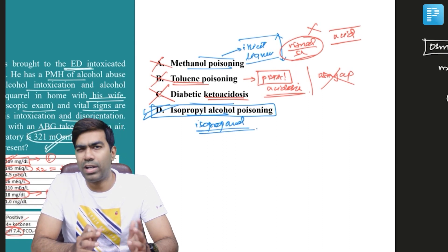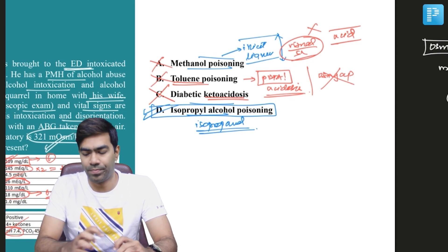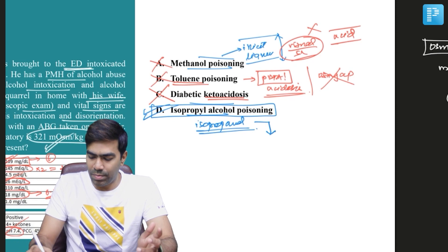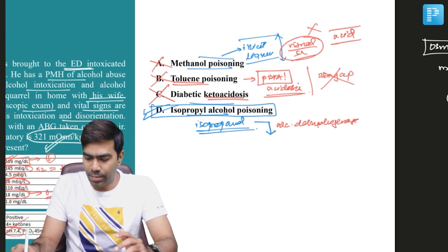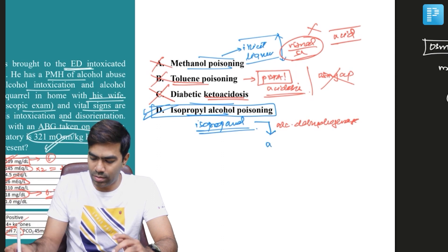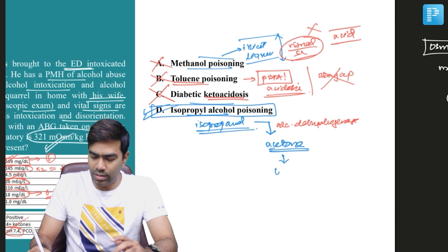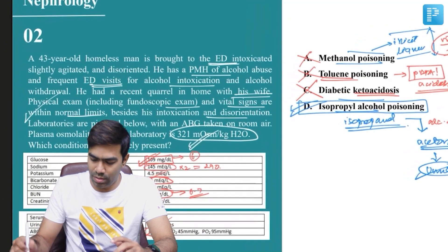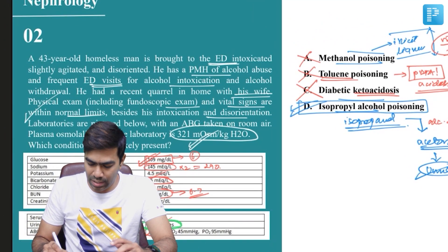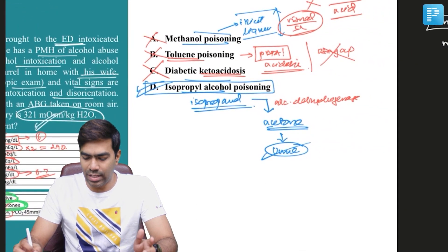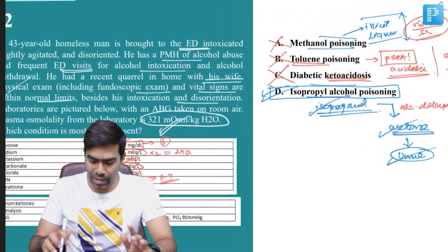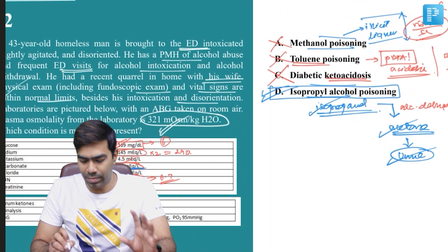Isopropanol is found in petroleum products generally — paints, paint thinners, and sometimes nail polish thinners. Isopropanol is an alcohol, so it is metabolized by the same alcohol dehydrogenase enzyme that metabolizes methanol, ethanol, and ethylene glycol — but it is converted into acetone. This acetone leaks into the urine, resulting in ketonuria, which is why this patient has four-plus ketones in the urine, and serum ketones are also testing positive. Isopropanol is directly converted to acetone, and no bicarbonate is utilized in this process.